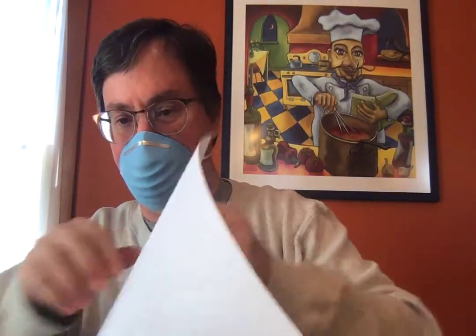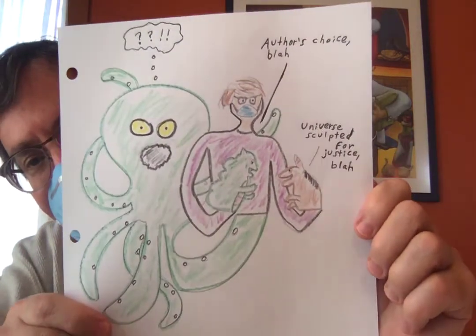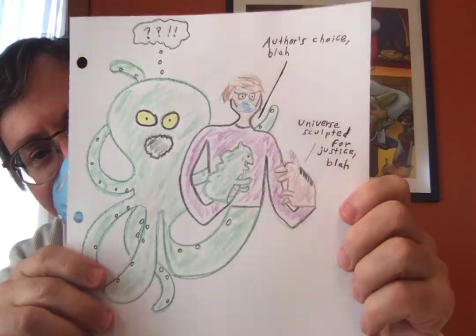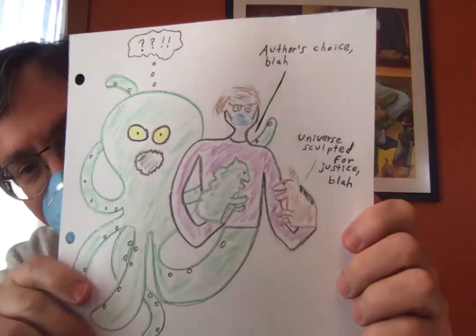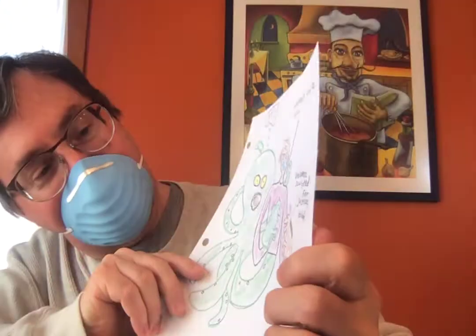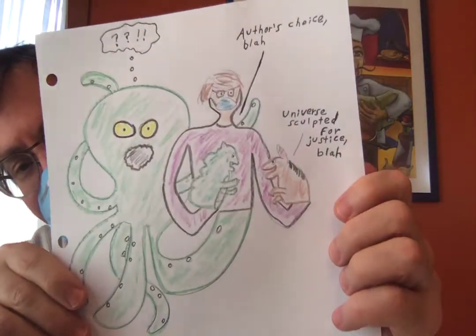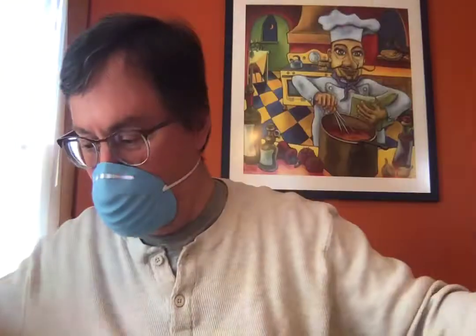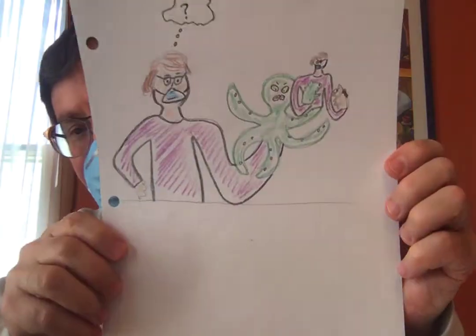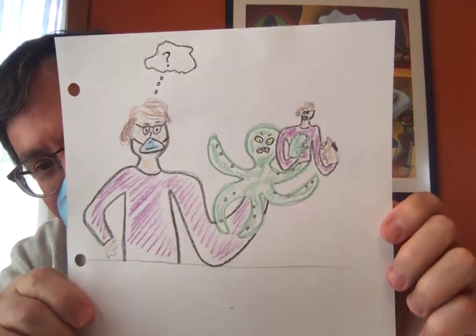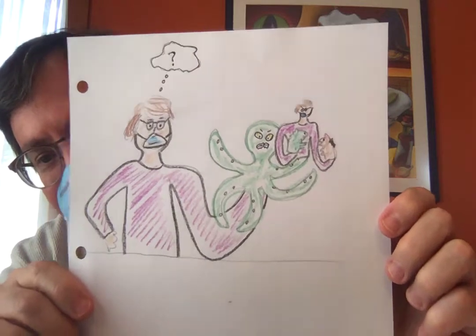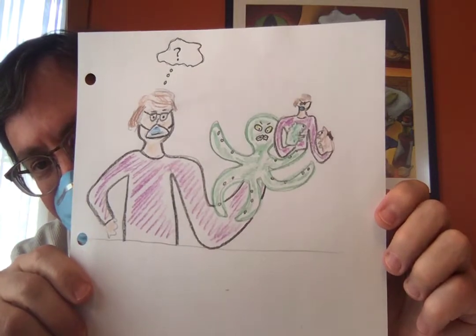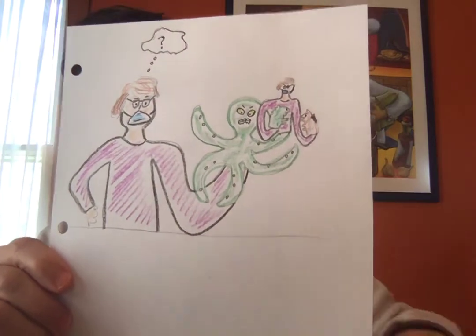Then in the next panel, the evil octopus is registering some sort of surprise while the characters continue their conversation — one says 'author's choice, blah,' and the other says 'universe sculpted for justice, blah.' Now there's going to be one more panel. We zoom out once again, and we see that the evil octopus is actually himself a puppet. But wait, is there a final twist? It looks like it, because the puppeteer has that same question mark over his head. What could it mean?